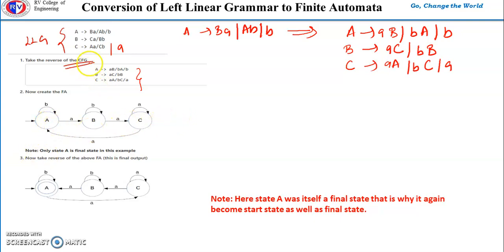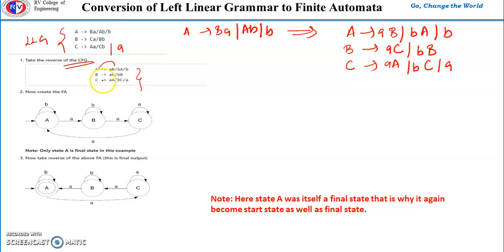Since we have three non-terminals A, B, and C, we write three states A, B, and C. From state A to state B there is a transition for input a. From A to A there is a self-loop for input b. A is the only final state, so terminals go to the final state — meaning the terminal b in A → b also has a self-loop on A. From state B to C there is a transition for input a.